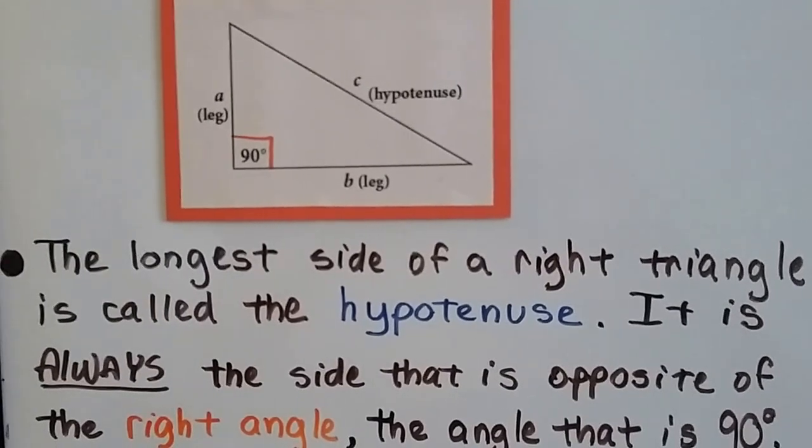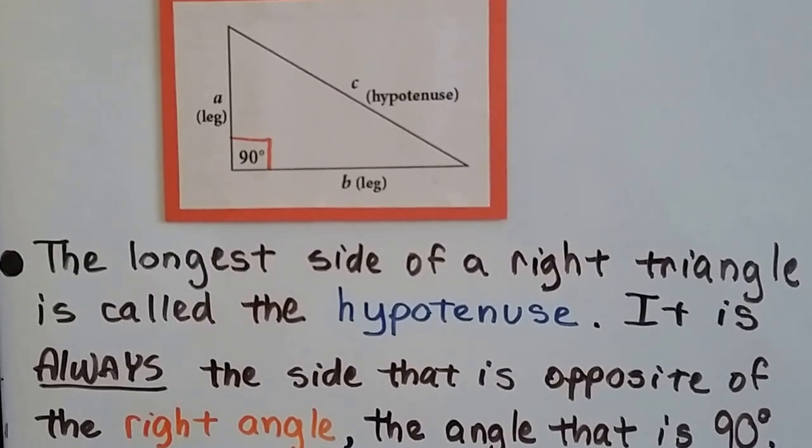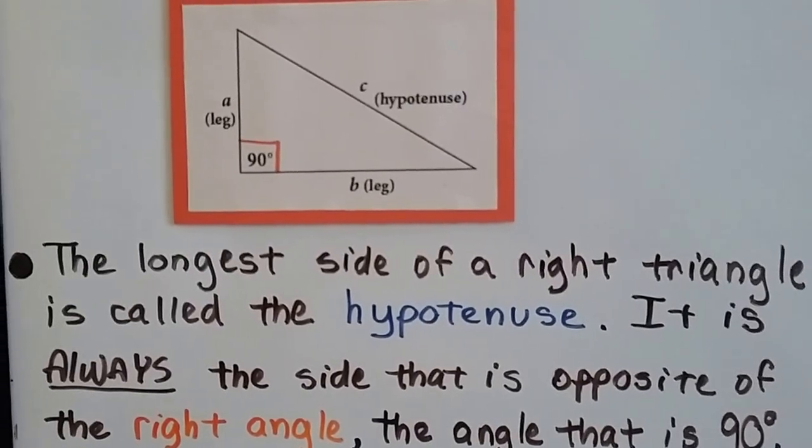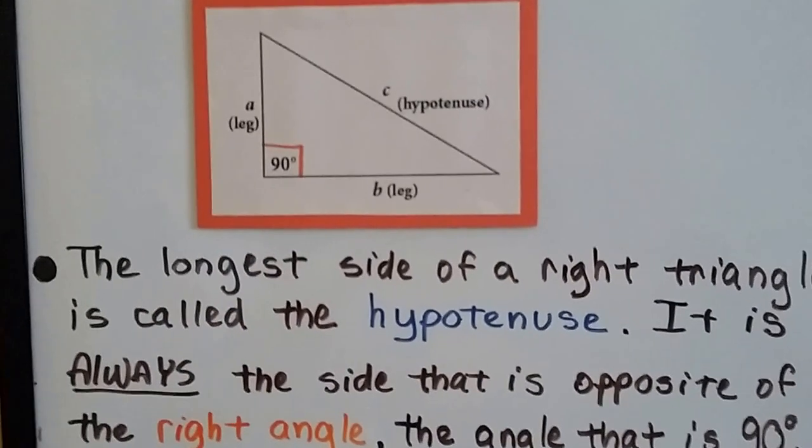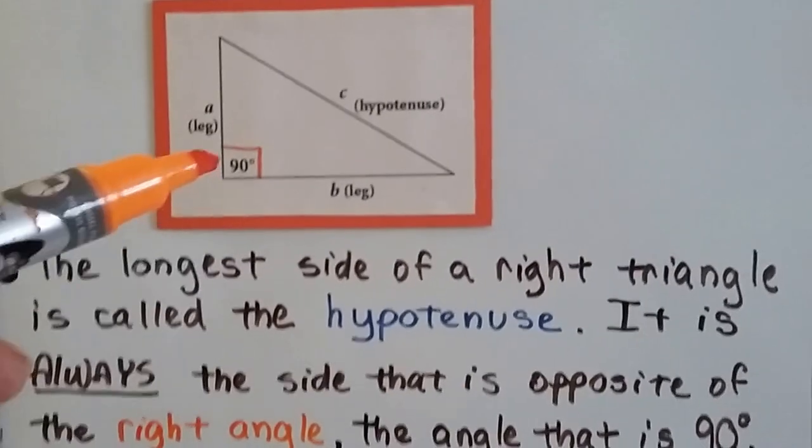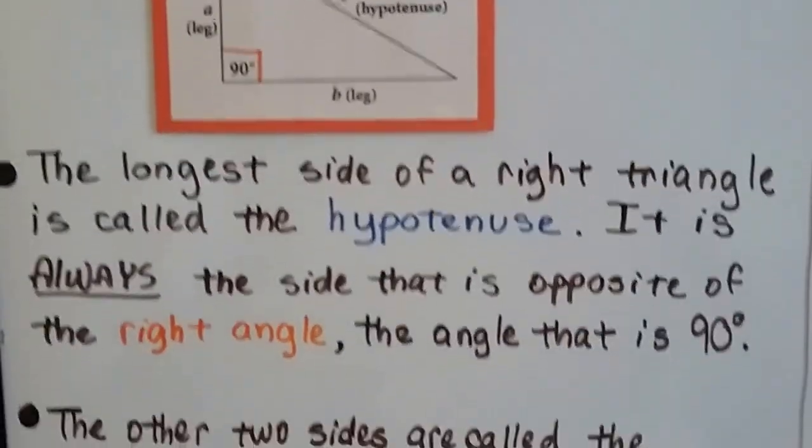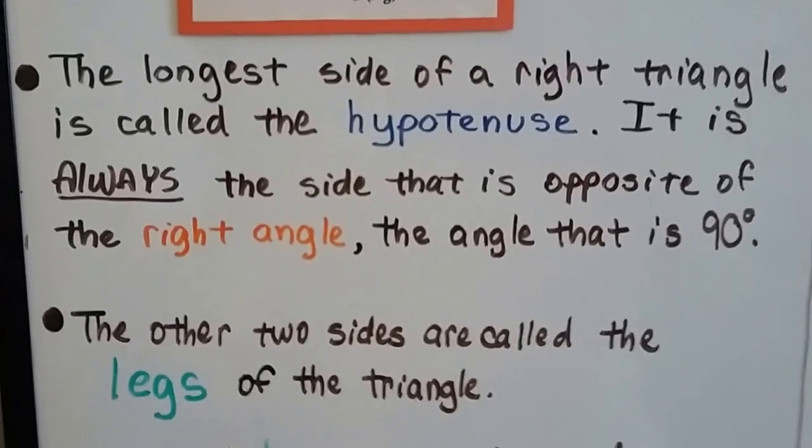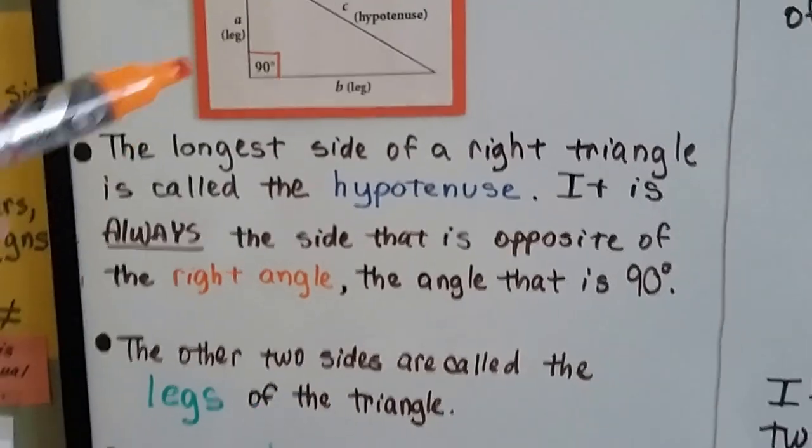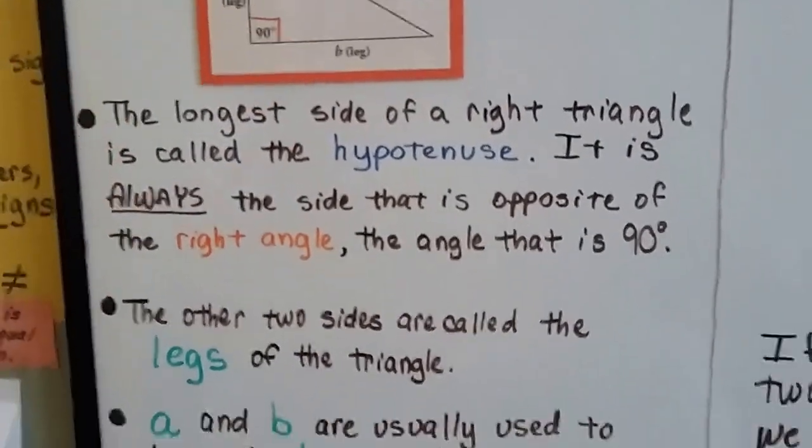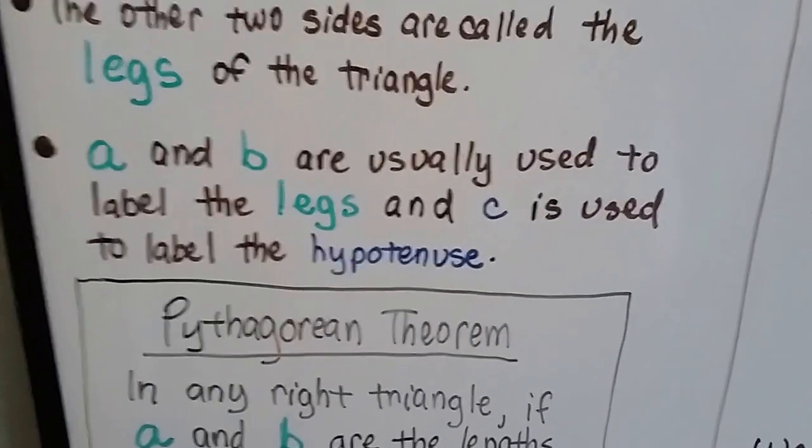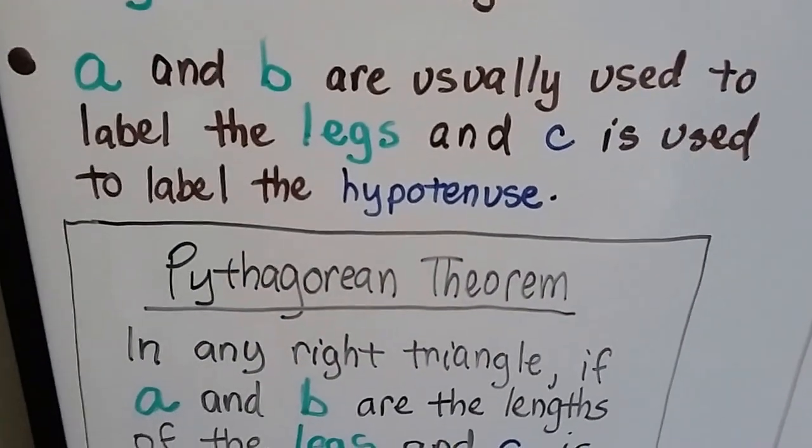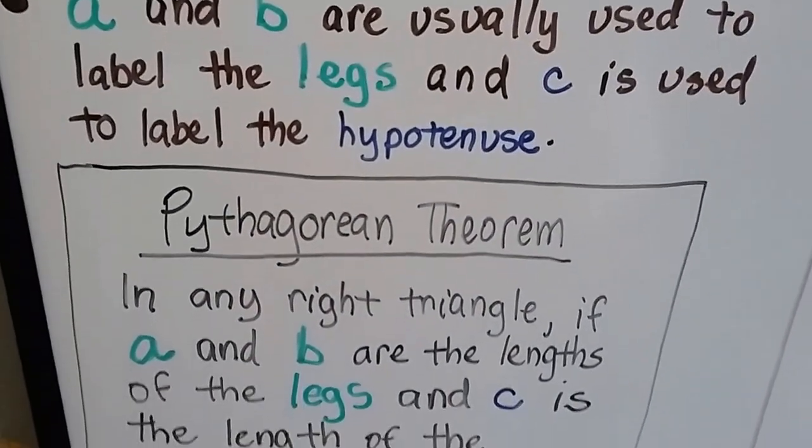So we can see the 90 degree angle there, the little square box, and you can see that the hypotenuse is on the opposite side of the triangle. The other two sides are called the legs of the triangle. We have a leg here, a leg here, and the hypotenuse. And a and b are usually used to label the legs, and c is used to label the hypotenuse.